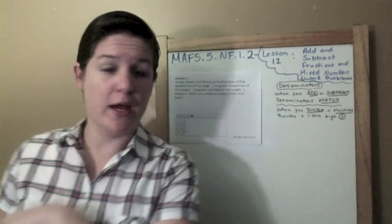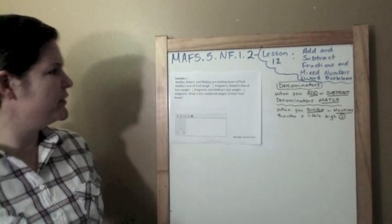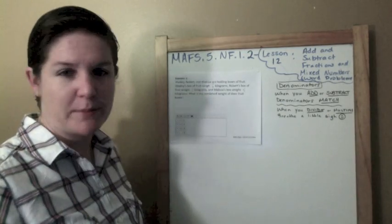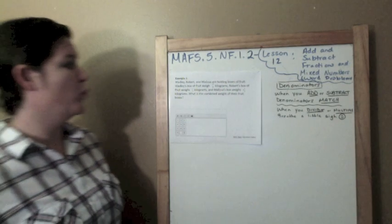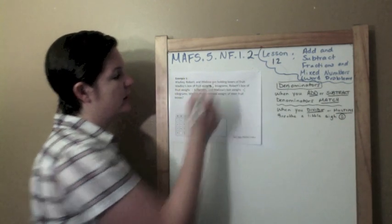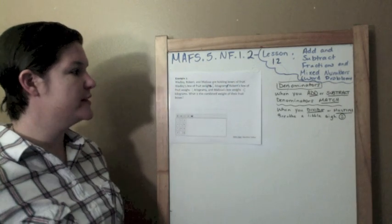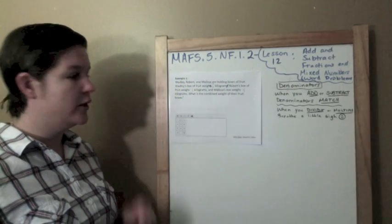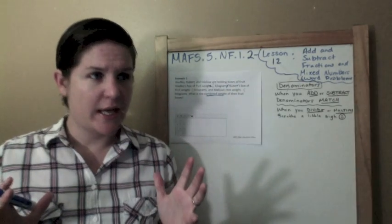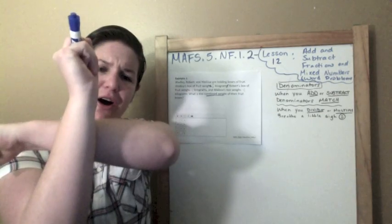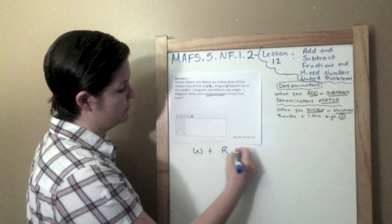All right, so example one. Wade Lee, Robert and Melissa are holding boxes of fruit. Wade Lee's box of fruit weighs 7/8 kilogram. Robert's box of fruit weighs 1 and 3/4 kilograms, and Melissa's box weighs 2 and 1/2 kilograms. What is the combined weight of their fruit boxes? So, let me make sense of this. Each person is holding a box that each has a different weight, and I'm trying to figure out the combination of all three. Therefore, I am adding them.